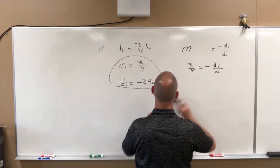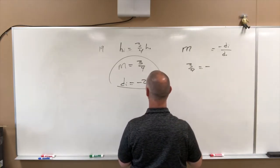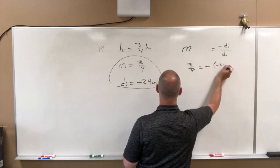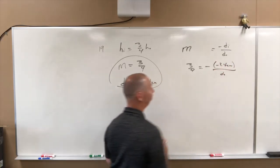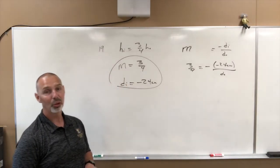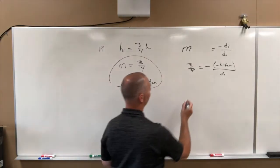We're not given a ton of information, but with this information, we can ignore this piece in the middle here, and M equals negative DI over DO will help us to find the DO, which is the object distance. So we're going to go three-quarters equals to negative DI over DO. I'm going to put my numbers in here. Negative 24 over DO. And if I solve for DO, we will get a DO of 32 centimeters.